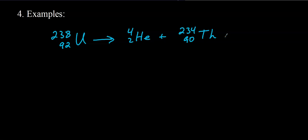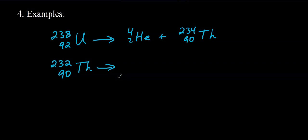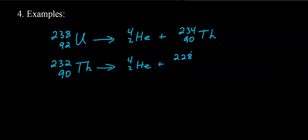Another example: thorium-232 undergoes alpha decay. Like uranium, thorium has no stable isotopes — thorium-234 interestingly undergoes beta decay, but thorium-232 also undergoes alpha decay. The nucleus we end up with has a mass of 228 and a charge of 88. What has a nuclear charge of plus 88? That would be radium. Radium is radioactive — famously associated with the Radium Girls, the clock and watchmakers who suffered from radiation exposure.